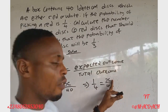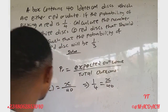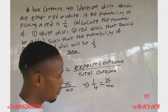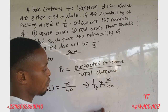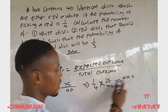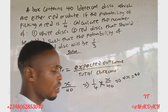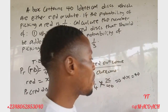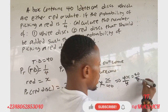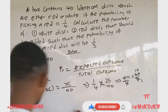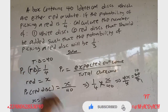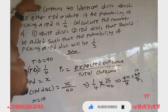Now we make s the subject of the formula. Cross-multiplying: 4s = 1 × 40, so 4s = 40. Dividing both sides by 4: s = 40/4 = 10. Therefore s = 10, meaning the number of red disks inside the bag is 10.